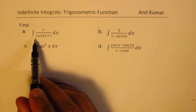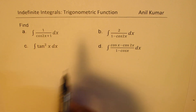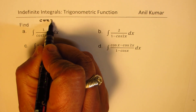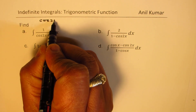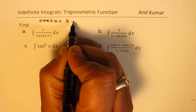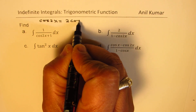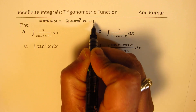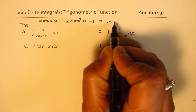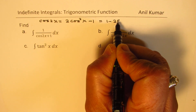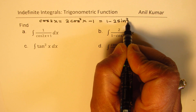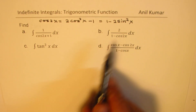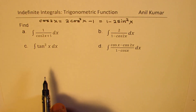Cos 2x can be written as 2 cos squared x minus 1, and also as 1 minus 2 sin squared x. Knowing these forms of cos 2x helps us simplify these expressions.